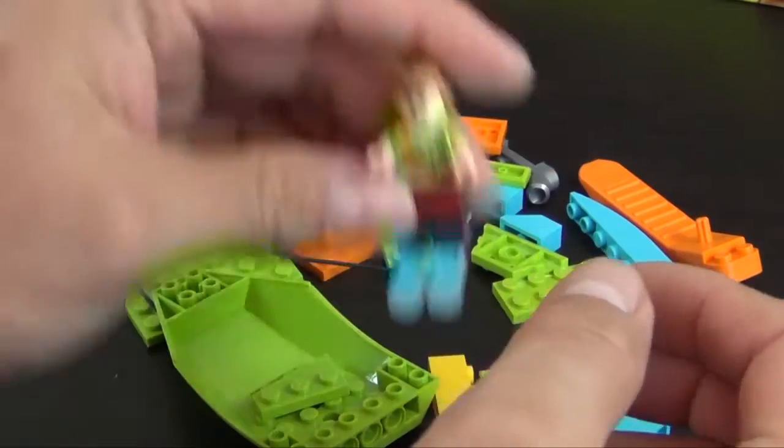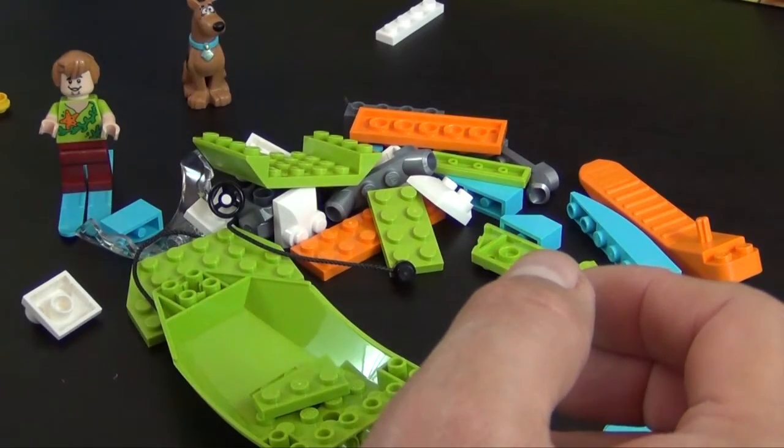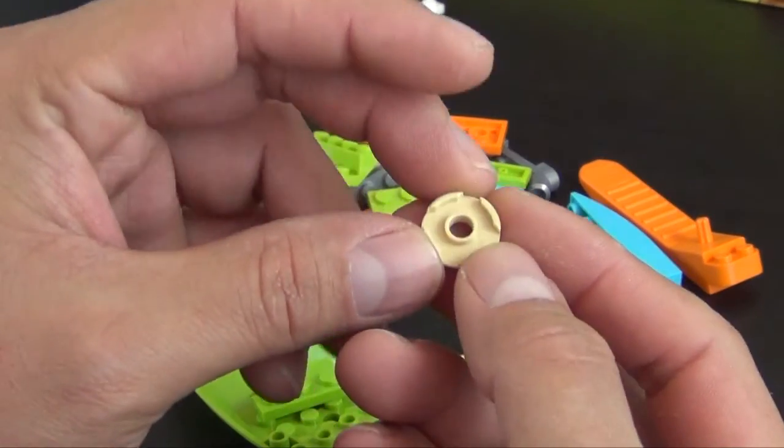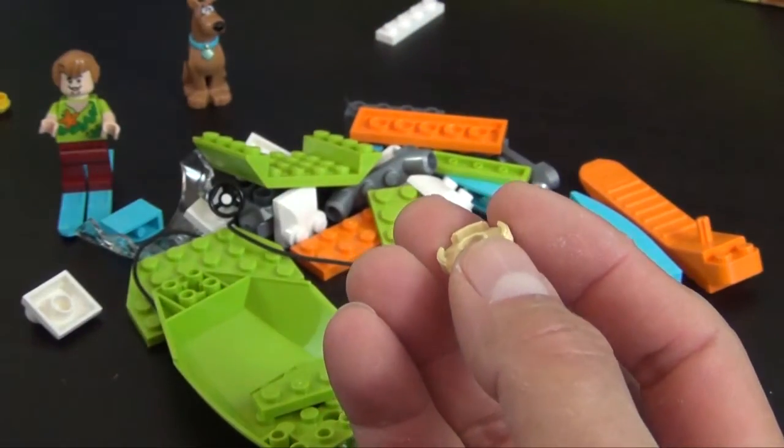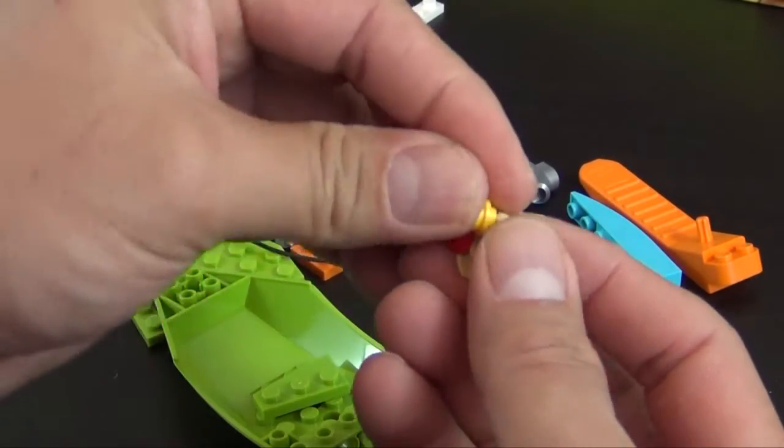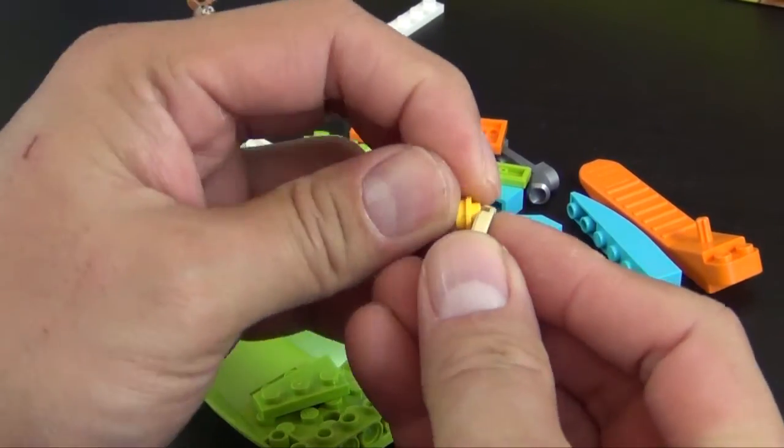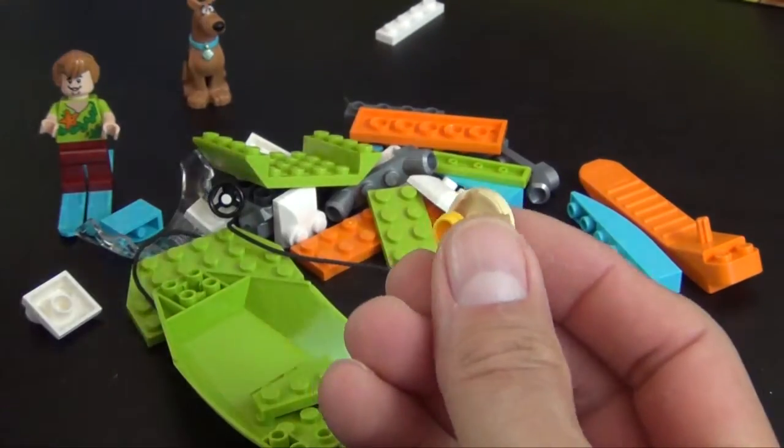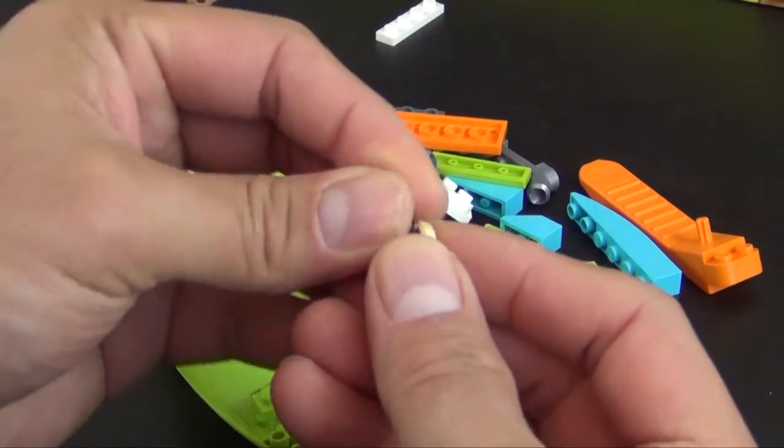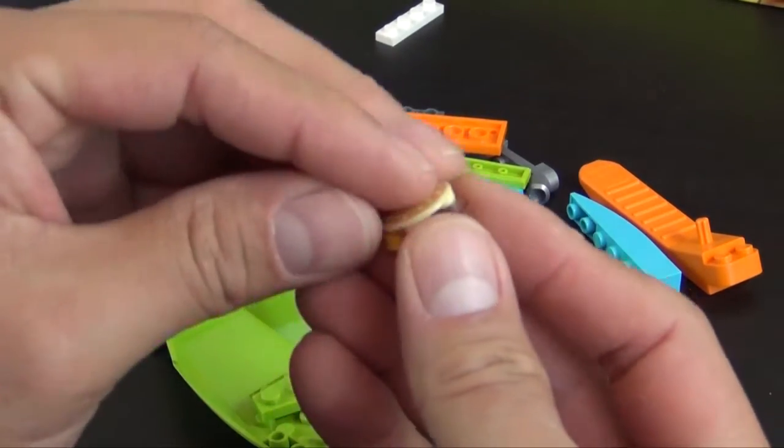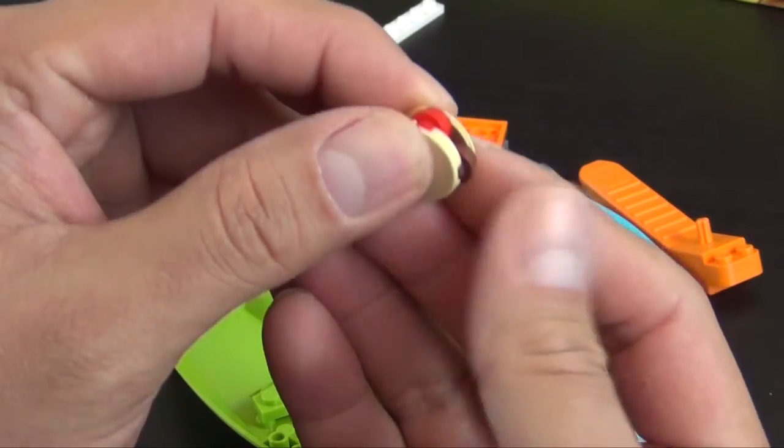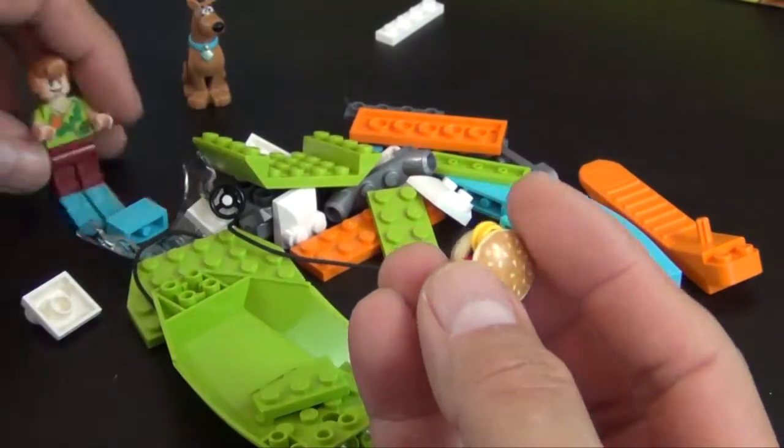He's holding a hamburger, so let's go ahead and make the hamburger. We'll start with this two by two round tile with the hole in the middle. We're going to attach an assortment of different color studs that represent the ingredients on the hamburger, and then we're topping it off with this sesame seed bun printed inverted tile.